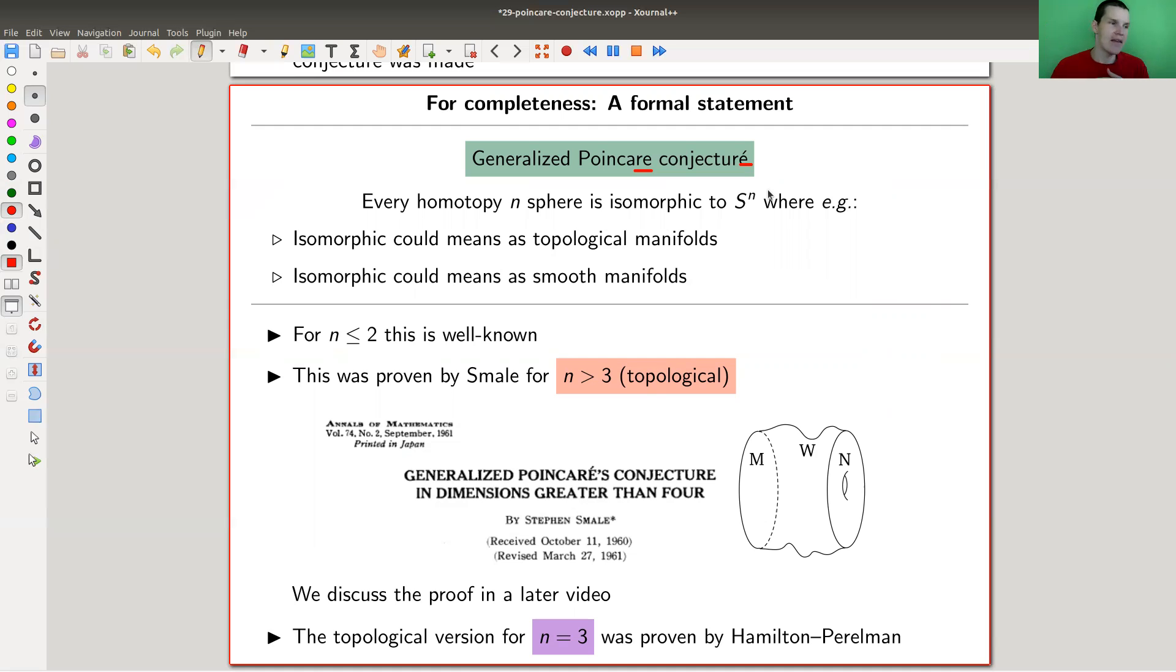For n less than or equal to 2, we have the classification of surfaces. You just can't classify higher dimensional manifolds - that's why it gets so much more complicated.